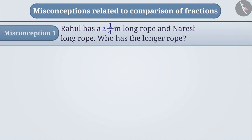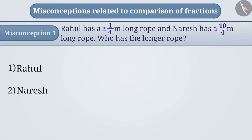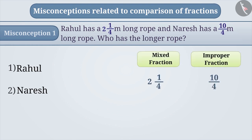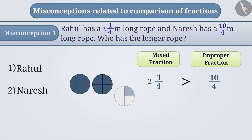Misconception 1. Rahul has a 2 and 1/4 meter long rope and Naresh has a 10/4 meter long rope. Who has the longer rope? Sometimes it is misunderstood that a mixed fraction is greater than an improper fraction because it contains one or more whole parts. Due to this misconception, it is understood that Rahul has the longer rope. This is an incorrect understanding.